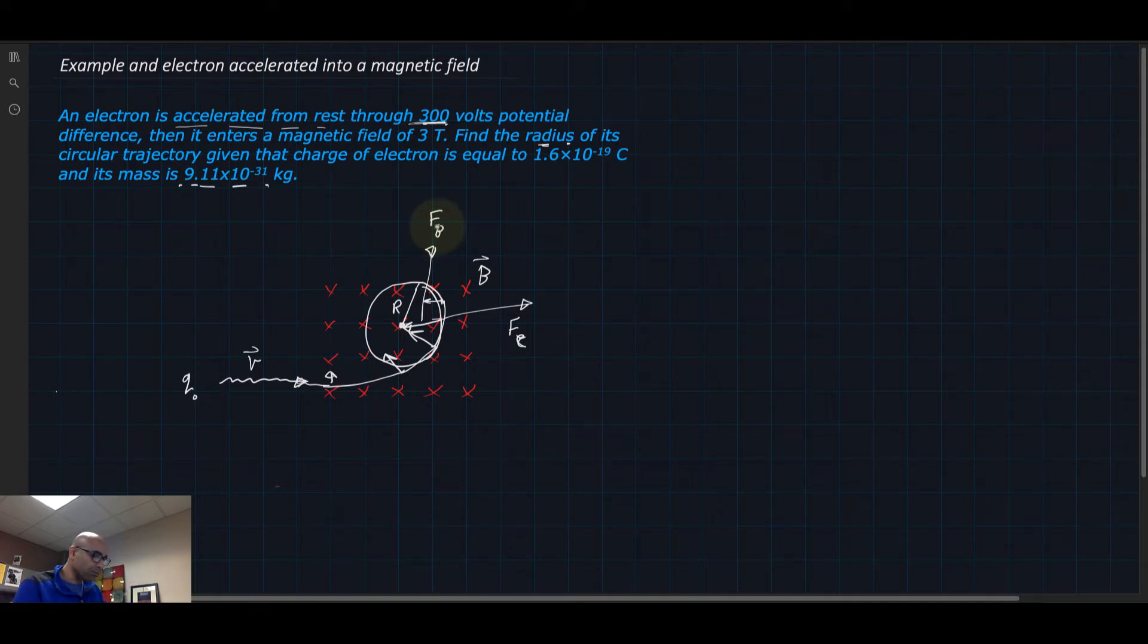F_B equals Q V times B times sine theta, but theta is 90 degrees because everything is perpendicular. The angle between the velocity and the magnetic field directions is 90 degrees, and sine 90 is 1.